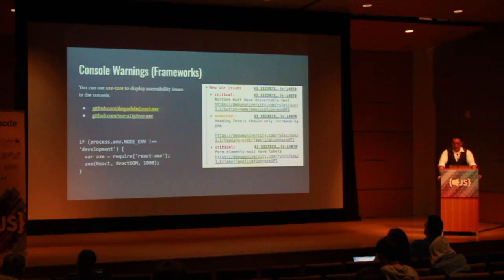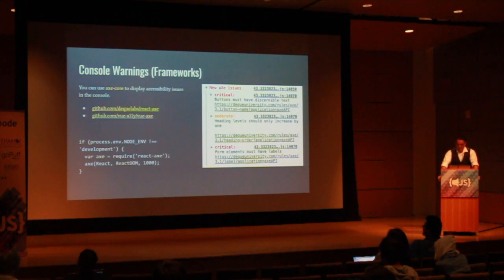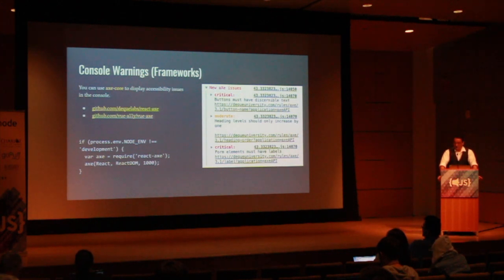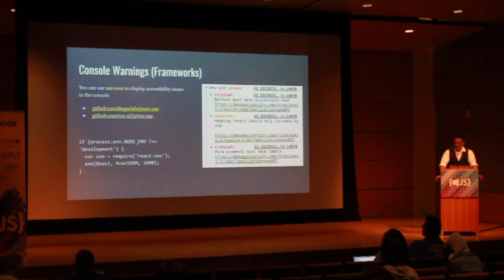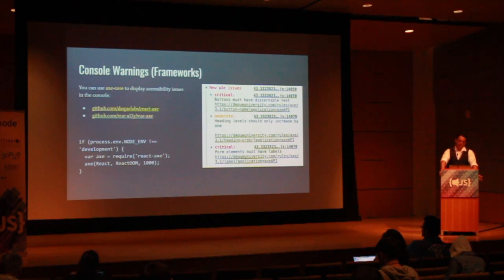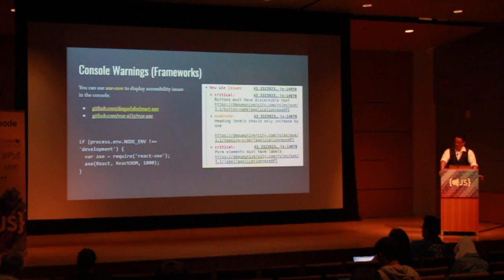While you're developing and checking your code in the browser, you're already checking your console for JavaScript errors. You can use a package that will automatically test the code in the browser and throw a warning in the console if it finds anything. React and Vue both have packages you can install that use Axe Core. After one of these is properly configured, it'll check the environment so that errors won't appear in production but will appear in your local or development environments. It'll then import Axe Core, run the Axe Core code after a set timeout, and then display issues in the console.